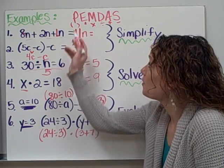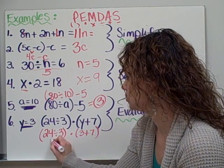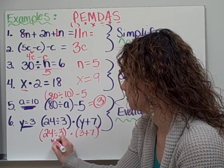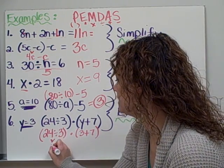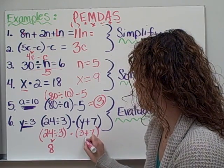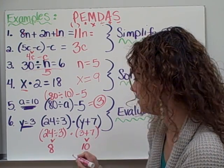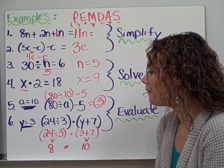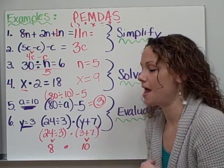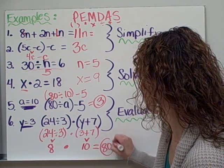Now we know, with our order of operations, we must do whatever is in the parentheses first. So let's deal with this set of parentheses to begin with. 24 divided by 3 equals 8. And 3 plus 7 equals 10. I then need to bring down my multiplication sign. And now I have the simple problem of 8 times 10, which is equal to 80.